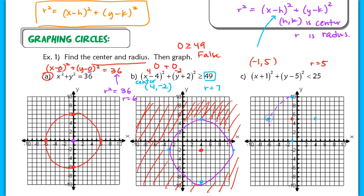Draw the dashed circle. When I test the center by plugging in negative 1 for x and 5 for y, I get 0 plus 0, giving 0 is less than 25. That is true. So I shade the inside, because all of those points satisfy this inequality.